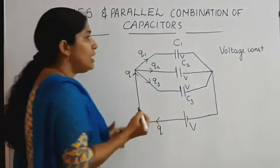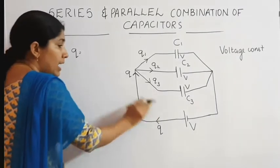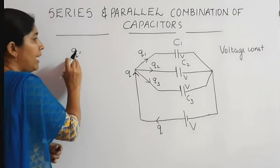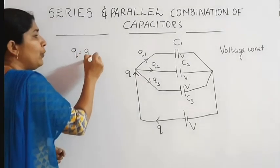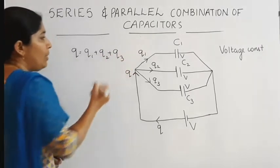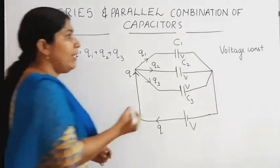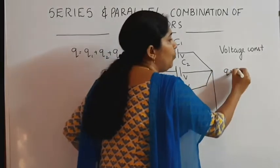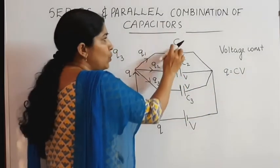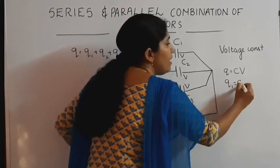The charge from the battery Q is divided into three portions: Q is equal to Q1 plus Q2 plus Q3. We know Q equals C into V. When charge Q1 flows through capacitor C1, Q1 is equal to C1 into V.